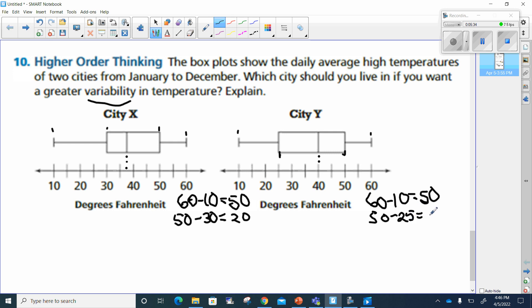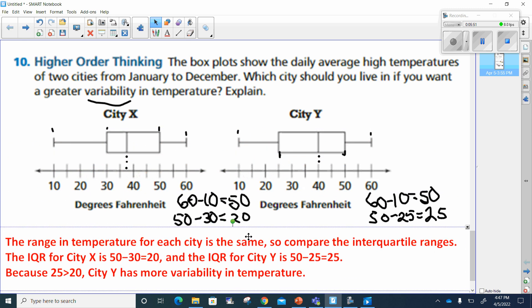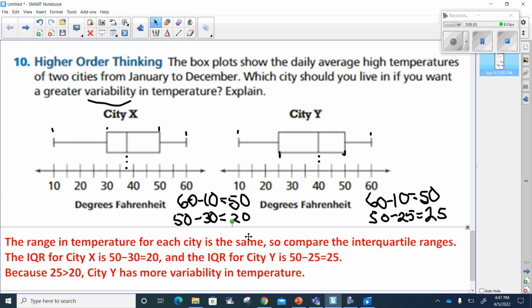So the inner quartile range for city Y is going to be greater. So I can say that the range and temperature for the cities is the same. So we compare the inner quartile ranges. The inner quartile range for city X is 50 minus 30, as we said here, and inner quartile range for city Y is 50 minus 25, as we said here. Because 25 is bigger than 20, city Y has more variability in temperature.